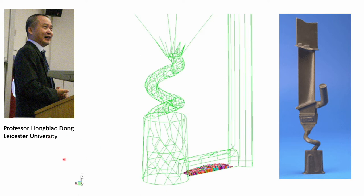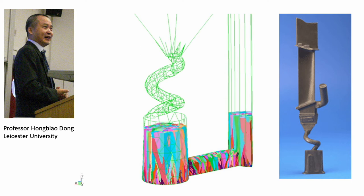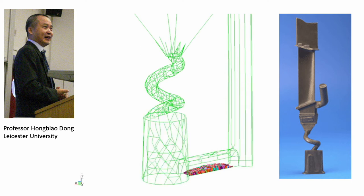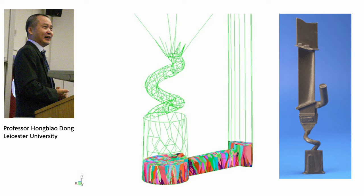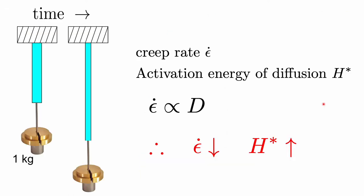A simulation by colleague Hong Biao Dong at Leicester University — one of the most-viewed videos on the channel — illustrates this process. You can see solidification starting as a polycrystal, with some crystals growing more rapidly than others. One crystal makes it through the spiral so that the rest of the blade solidifies as a single crystal. It is a very clever device that enables turbine blades to solidify as single crystals on a routine basis in a production factory.